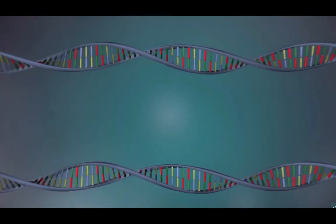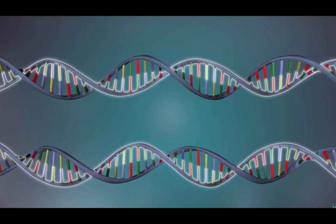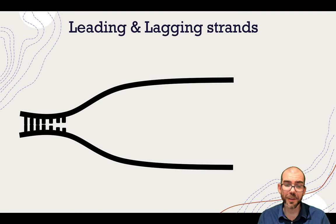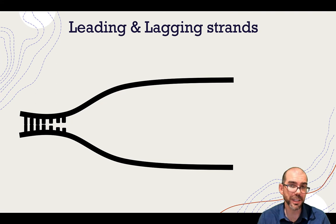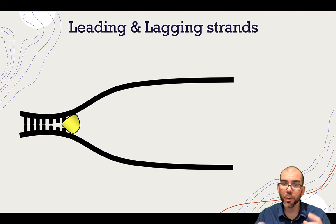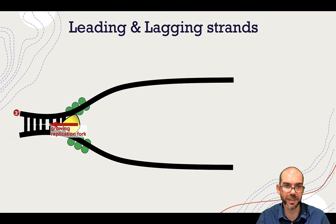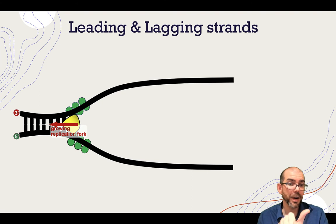DNA replication is described as semi-conservative because each DNA molecule is made up of one old, conserved strand and one new one. Let's look at one end of our replication bubble — one replication fork — in more detail. It's happening on both ends. DNA helicase opens the double helix, and single-stranded binding proteins keep it open. It continues to build in one direction as helicase continues to unzip.